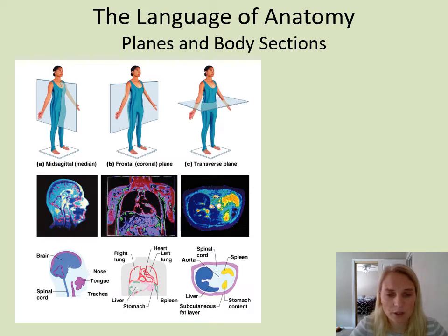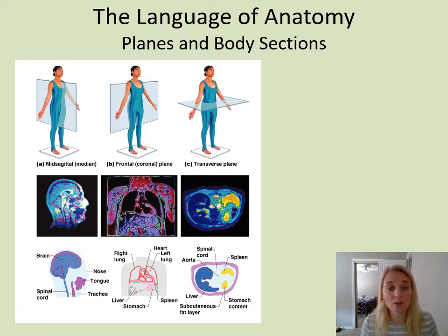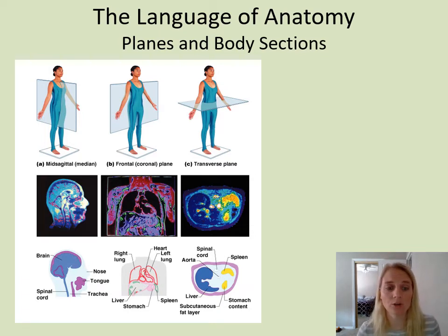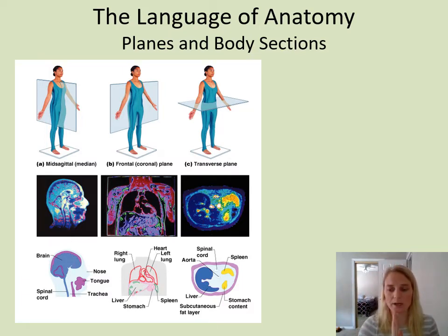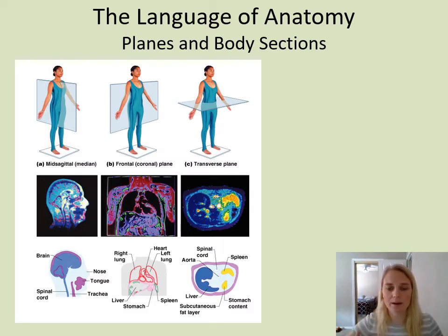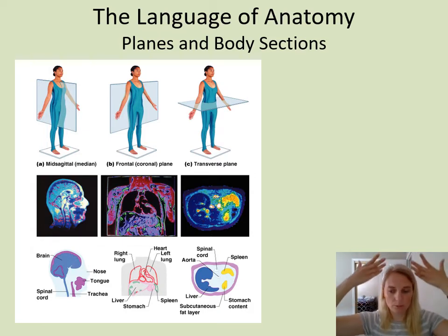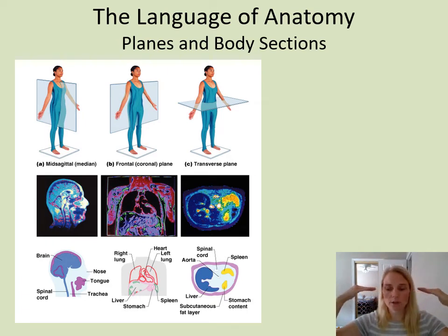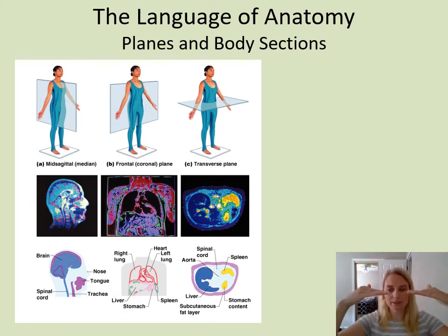Planes and body sections are ways that we can look inside the body from different perspectives. If we take a slice right down the middle of our body, this is called the mid-sagittal, sagittal, or median section — it allows us to take lateral or side views. The frontal or coronal section separates front from back and gives us views from the front or the back. Transverse separates top from bottom and gives a superior or inferior view when slicing that way.